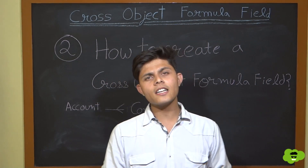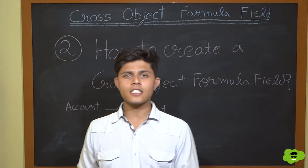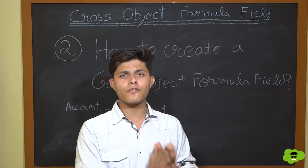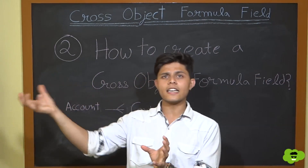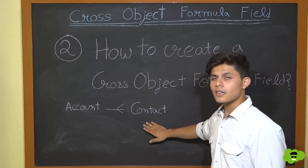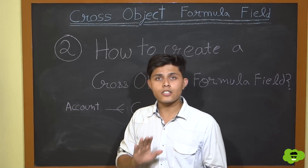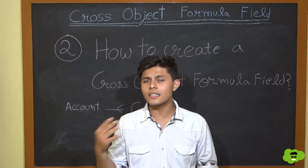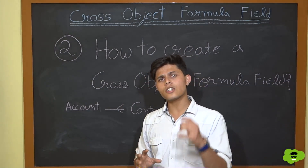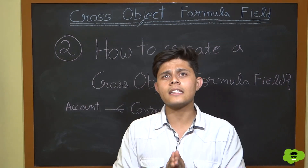Now that we understand what a cross-object formula field is, let's see how to create one. In Salesforce, there is no special button or action — you simply create a formula data type field on the object where you want to display the related object's field. For our example, we create a formula field on the Contact object that refers to a field on the Account object. The formula must reference a field from the one side of the relationship. Let's jump in and see how it works.